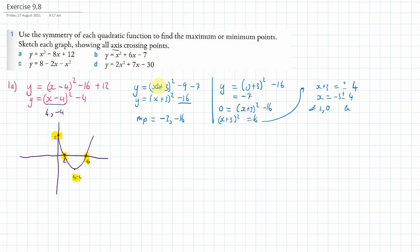The two x-intercept crossing points are (1, 0) and (−7, 0). Sketching this, we've got a crossing point at 1, a crossing point at minus 7, a minimum point at (−3, −16), and it crosses the y-axis at minus 7. This is essentially how we do these.